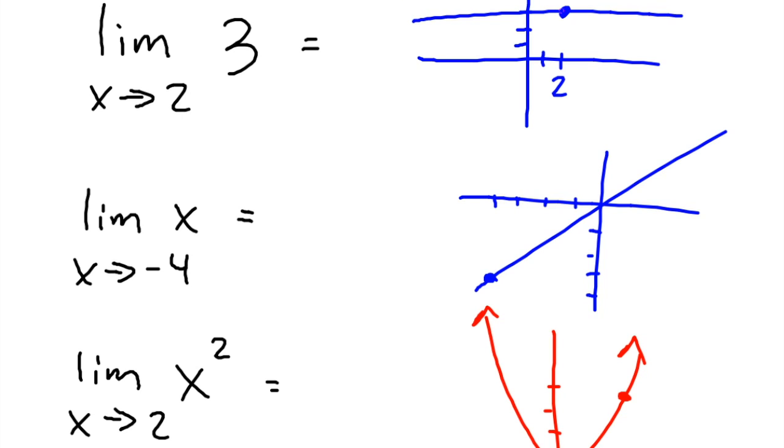you're gonna end up with a value of 3. As you approach from the right, you're gonna end up with a value of 3. So it makes it pretty easy for us in a little limit like this. Anytime it's equal to a constant, it's just gonna be that constant.